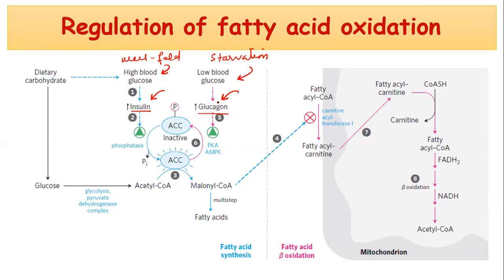Insulin and glucagon, just like the enzymes of glycolysis and gluconeogenesis, are subject to reciprocal regulation. Reciprocal regulation means that when one pathway is activated, the other is shut down.